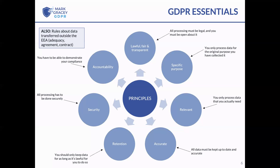The sixth principle is security, and it's usually the one most people focus on. GDPR requires you to apply appropriate technical and organisational measures to ensure the security and integrity of the data you're processing. That can range from encrypting data on a hard drive, to not sharing it with people who aren't entitled to see it, to preventing data breaches, to having a locked office.